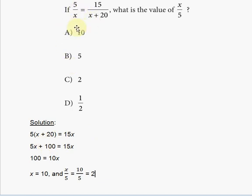When you do that, the product of the means will equal the product of the extremes. So 5 will multiply x plus 20, and that will equal 15 times x. Then you're going to distribute the multiplication here and you're going to get 5 times x plus 100 is equal to 15x.